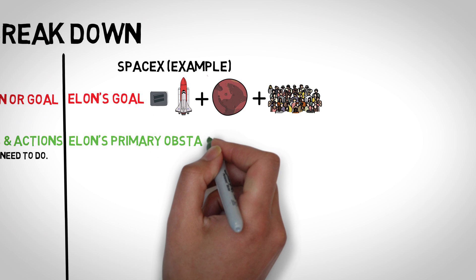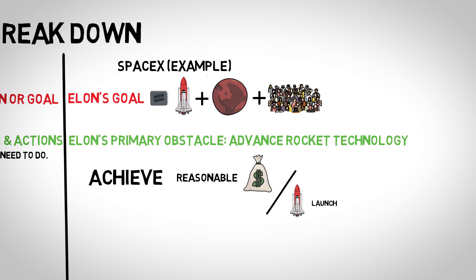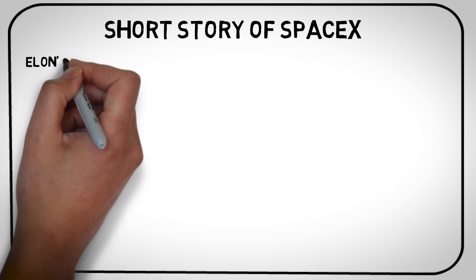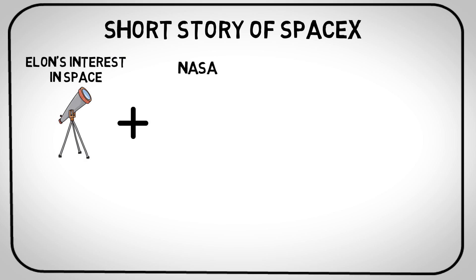Elon's primary obstacle in the beginning was that he needed to advance rocket technology to be able to reach Mars at a reasonable price. So here's a short version of the story. In 2001, a 30 year old Elon takes a huge interest in space and getting to Mars. He found out that NASA had no plans to do this so he set out on a mission to do it himself.